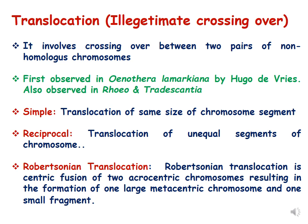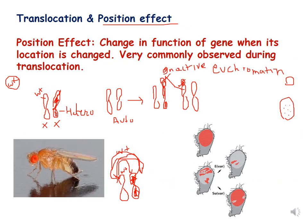Robertsonian translocation results in a very long chromosome and a short chromosome. Translocation was first observed in Oenothera lamarckiana by Hugo de Vries, and we can also observe it in Rheo and Tradescantia. Now let us discuss what is position effect and how translocation is related to it.